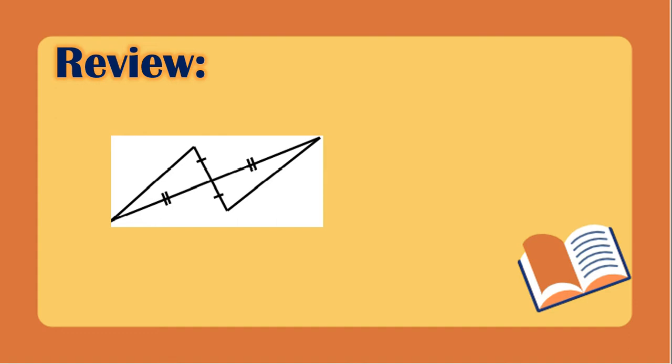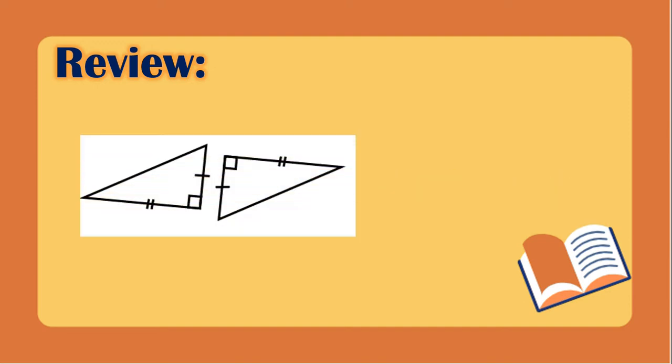Next, it is the same with the first example. We can prove that the vertical angles are congruent, so these triangles are congruent because of the SAS postulate. Another example is a right triangle. Here we have the two legs congruent, so these right triangles are congruent because of the leg-leg theorem, or LL theorem.